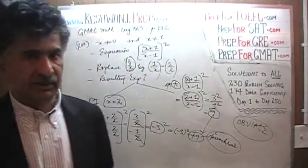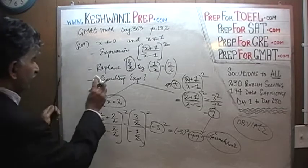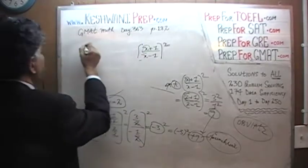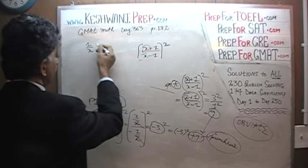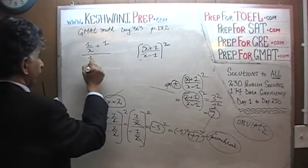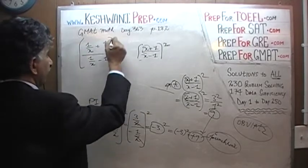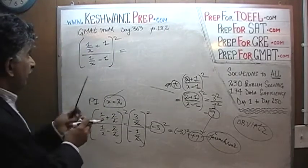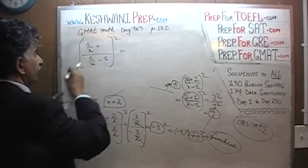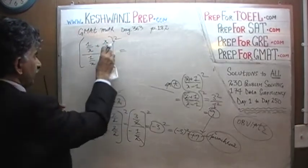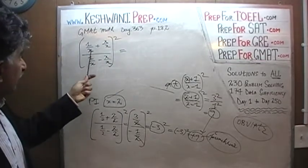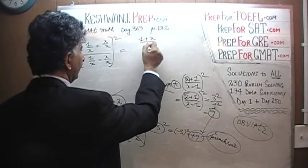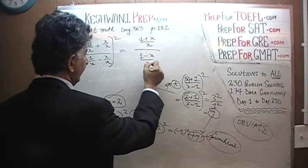Now let's do the same problem in a classical way. It is not necessary, but we're going to do it for learning purposes. Here's our expression. We're going to replace x by 1 over x. So x plus 1 becomes 1 over x plus 1, and x minus 1 becomes 1 over x minus 1. And remember, the whole thing has to be squared. We need a common denominator, so this can be written as x over x. So in the top we end up with 1 plus x over x, and the bottom we end up with 1 minus x over x, whole squared.